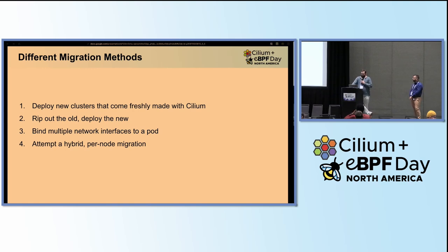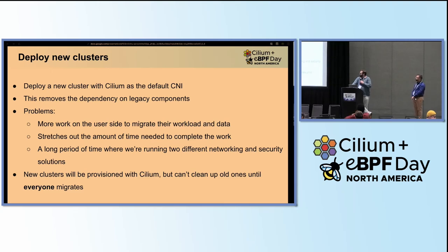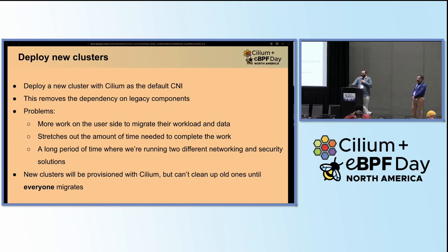We could just deploy new clusters with Cilium as our CNI — it removes dependency on our legacy stuff. But obviously it's significantly more work for end users. No matter how easy it may be to deploy an application to a new cluster, every app has different deployment, rollout, and migration concerns. It would basically make the amount of time where we had to run this migration not under our own control. Having high adoption is a good problem to have, but when we have a whole bunch of teams with their own priorities, you're just herding cats. So we discarded this fairly early — it didn't make sense for us.